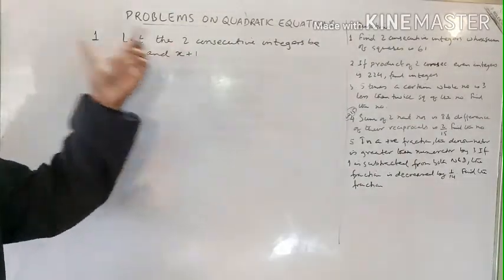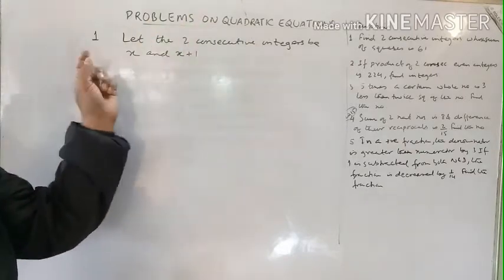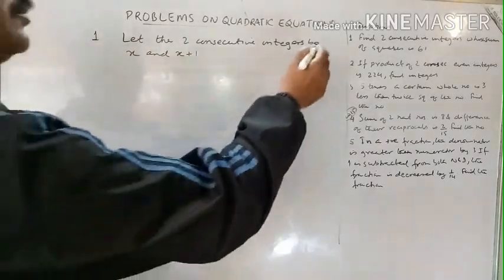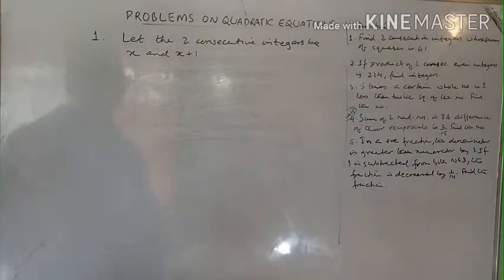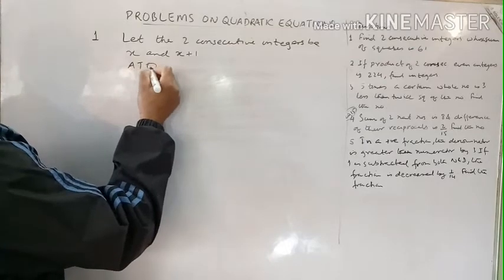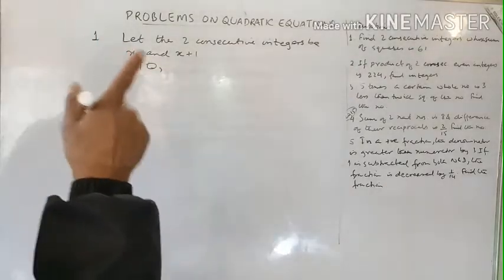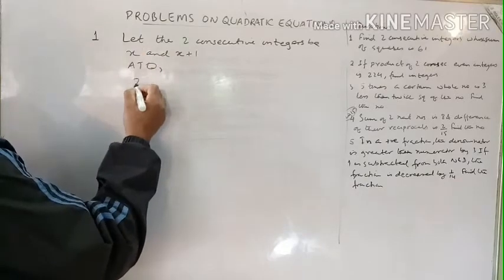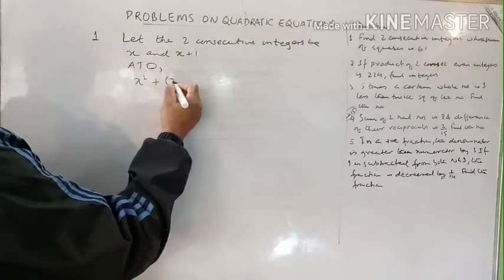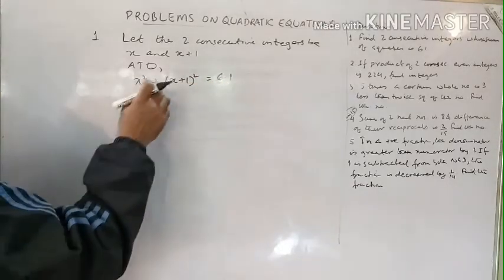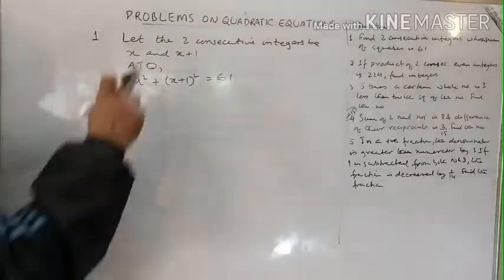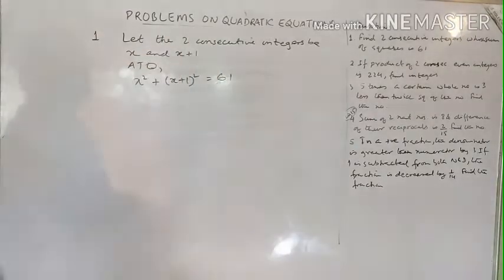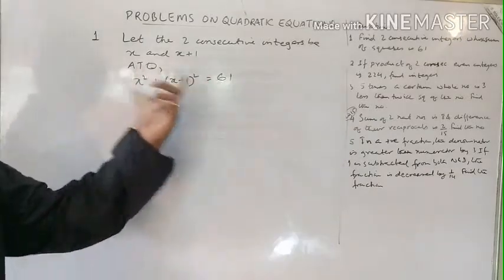We have supposed the two integers as x and x plus 1. Now according to the question, the sum of the squares of these numbers is 61. So we write: x squared plus (x plus 1) squared equals 61. This gives us our equation to solve.